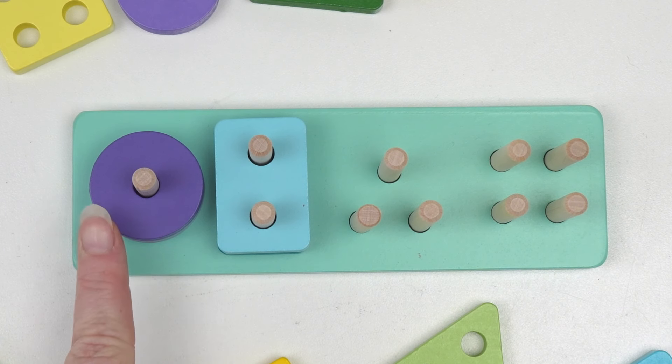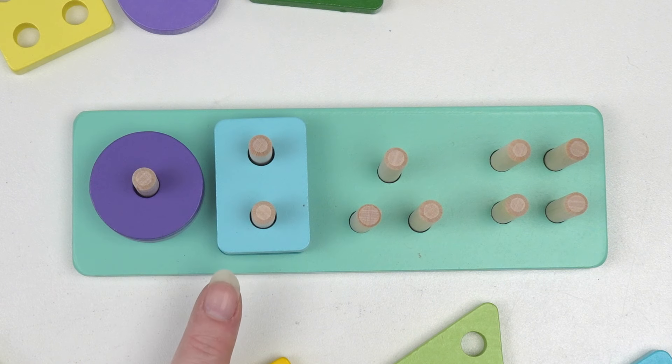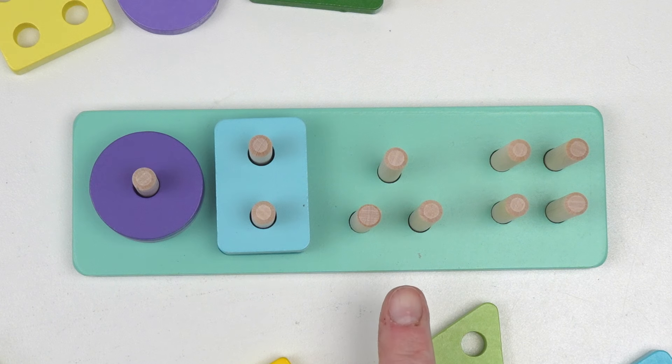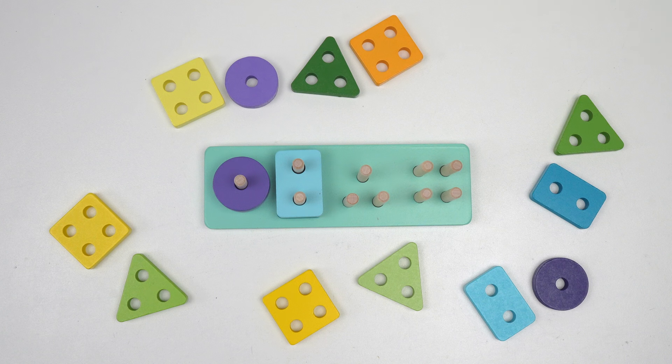So we had a circle with one hole and a rectangle with one, two holes. How many pegs are in this set? Awesome job! There are three pegs, so we need to find a shape with three holes.